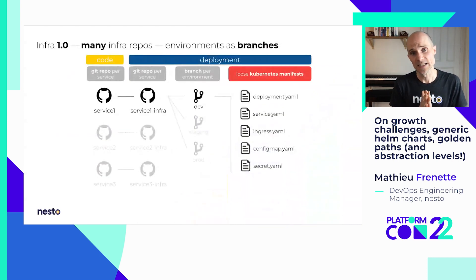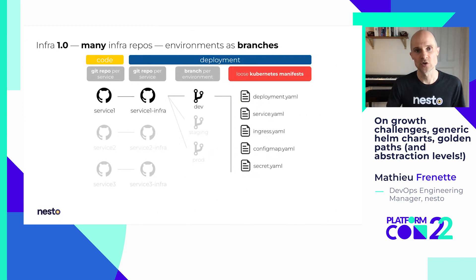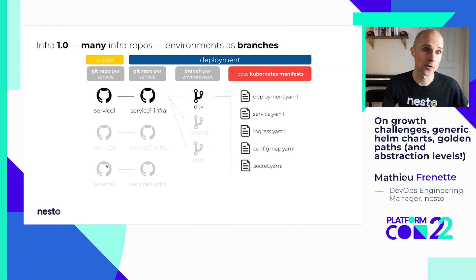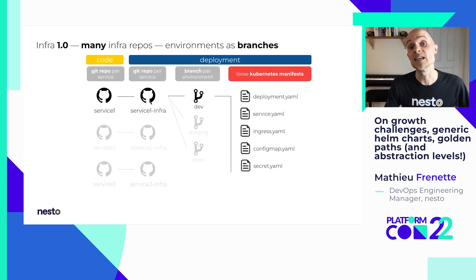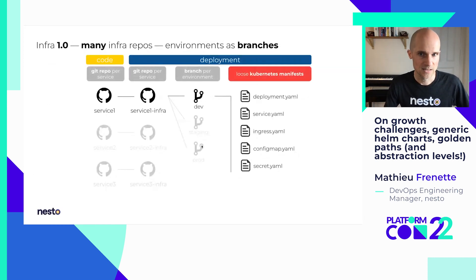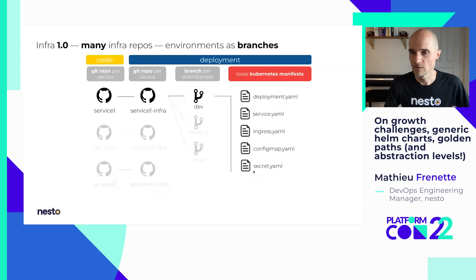What we had as a setup for deployments was that for each microservice, we had one Git repository. And for each one of those, we had another sister Git repository that contained the Kubernetes manifests that we wanted to deploy for those microservices. Within each one, we had one branch per environment, and within each branch, we had copies of raw Kubernetes manifests to deploy there.